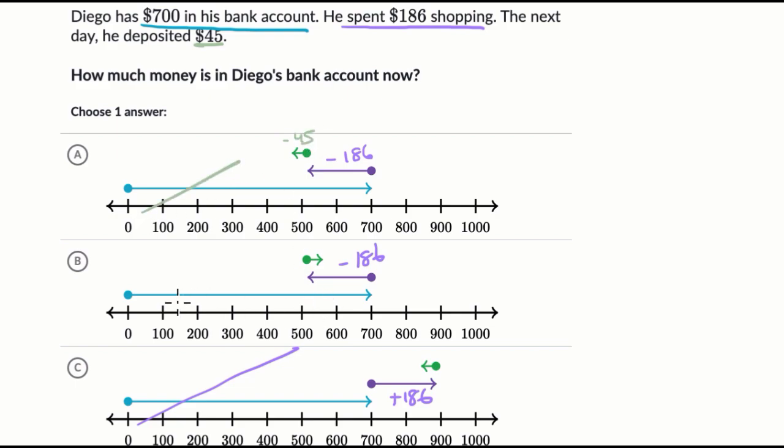Choice B looks right. We have 700. We took out 186 spending it. And then from that point, we add back another 45. So I am liking choice B.